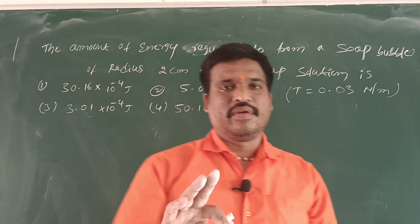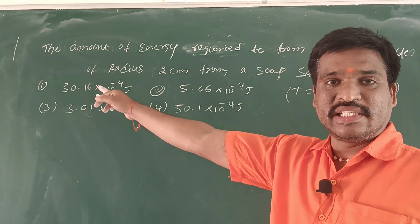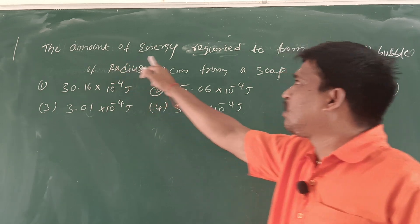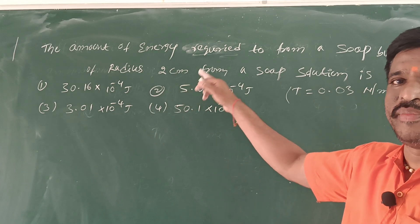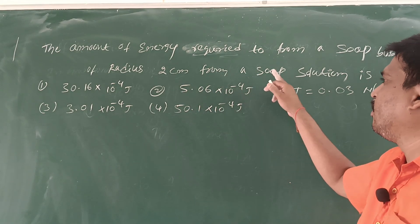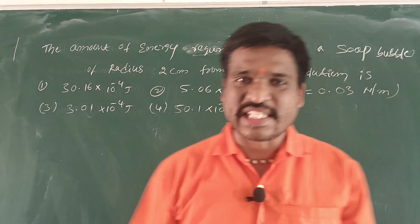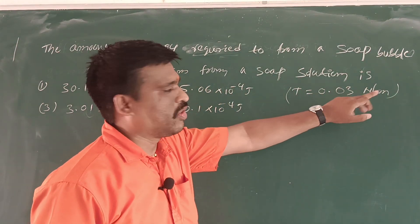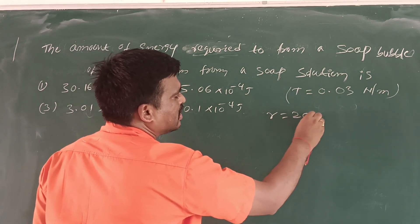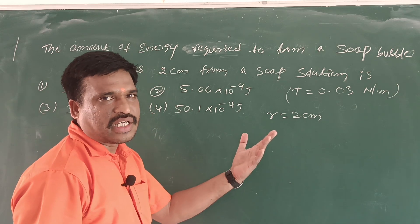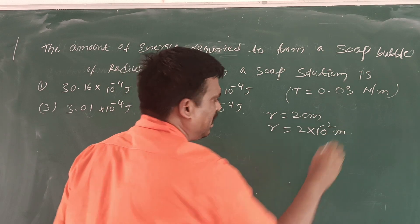In this session, the 2023 NEET problem discussed just now. So, the amount of energy required to form a soap bubble of radius 2 centimeters is given. From a soap solution, the surface tension of the soap solution is given: T is equal to 0.03 Newton per meter. Radius is equal to 2 centimeters, converted into meters: R is equal to 2 into 10 power minus 2 meters.